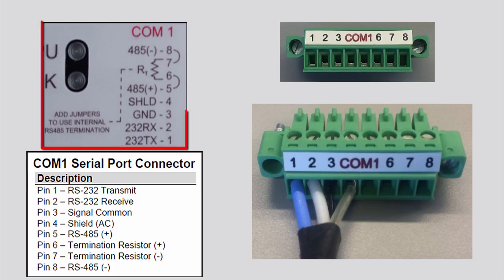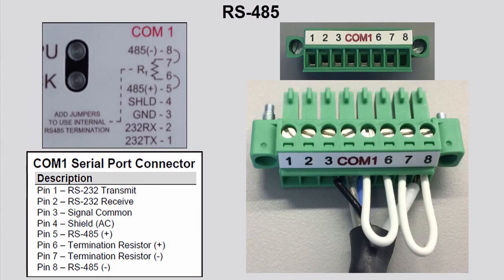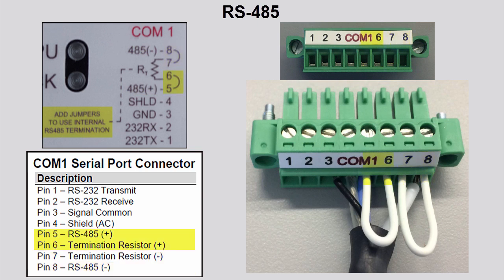Serial connections should be wired according to the chart on the back of the controller. For RS-232, transmit and receive signals are wired to pins 1 and 2 of the connector respectively, signal common or ground wired to pin 3, and shield wire wired to pin 4. For RS-485, positive and negative signals are wired to pins 5 and 8 respectively. Two jumpers — one wired between pins 8 and 7 and the other between pins 5 and 6 — connect the internal 120 ohm termination resistor. There should be a termination resistor on each end of the RS-485 line.